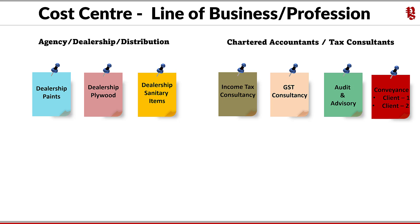You must be wondering what the cost center of conveyance is. These professionals have to spend on behalf of their clients, which is generally reimbursed by the client. One such example is conveyance, where they can create cost centers of conveyance client-wise to track the total expenses incurred on behalf of any particular client. This helps to quickly ascertain the value and charge it in the invoice. Other examples could be in the case of customs clearing, where the professional makes payments on behalf of their client like transportation, loading and unloading charges, and sometimes custom duty.